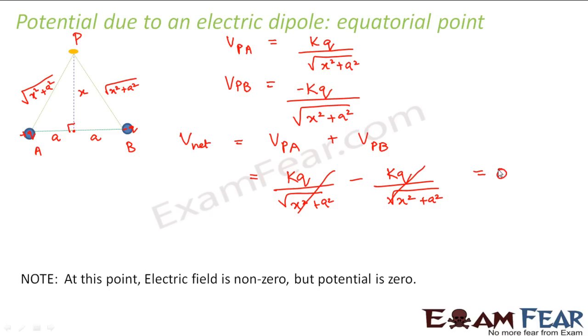An important point to note here is that at this point, that is at the equatorial point, the electric field is non-zero but potential is zero. Sometimes students make the mistake that if somewhere electric field is equal to zero, therefore the potential should be zero. Similarly, sometimes people think that if the potential is zero, that means there will be no electric field, but that is not true. It is possible that the potential is zero but the electric field is non-zero.